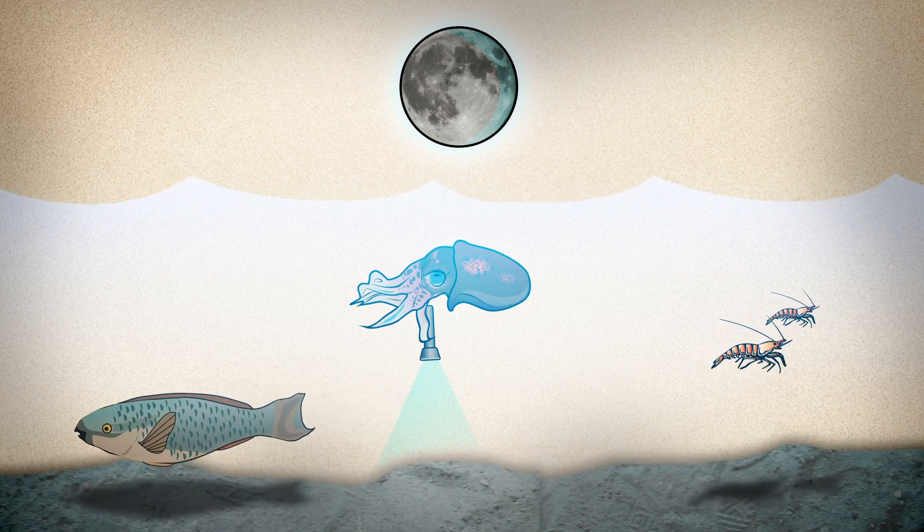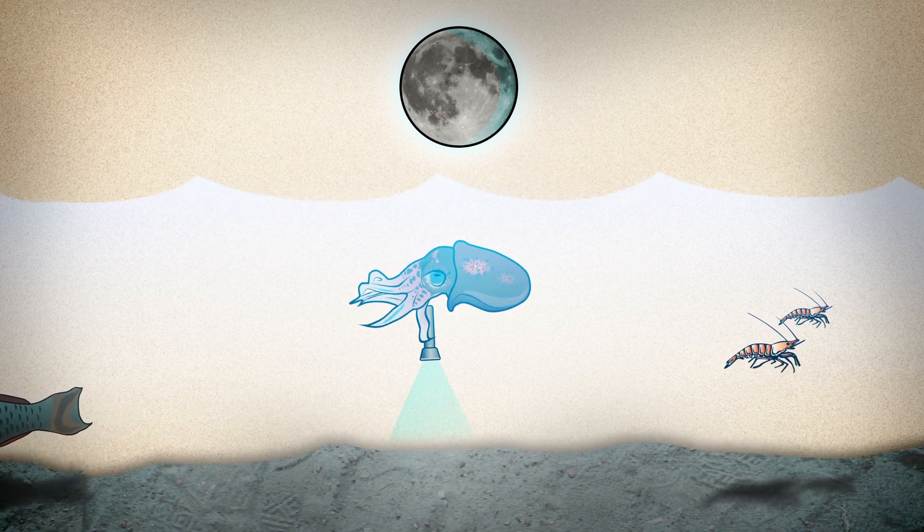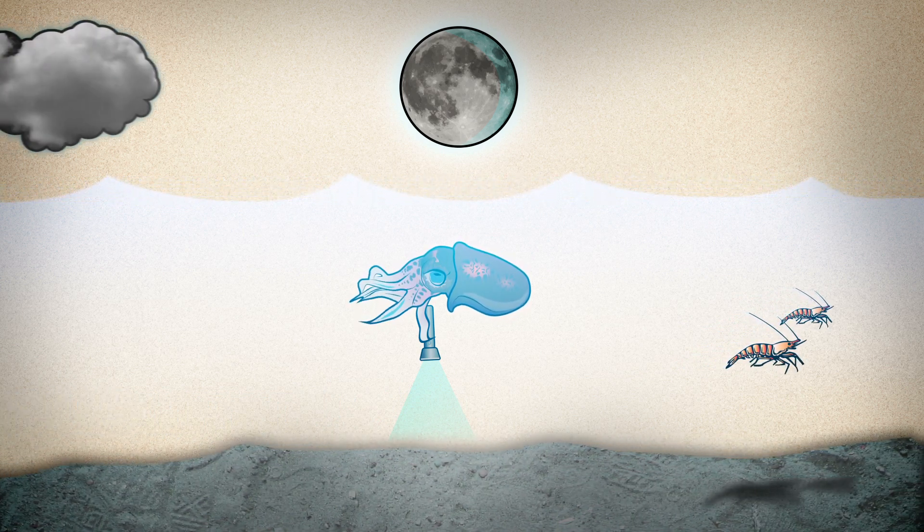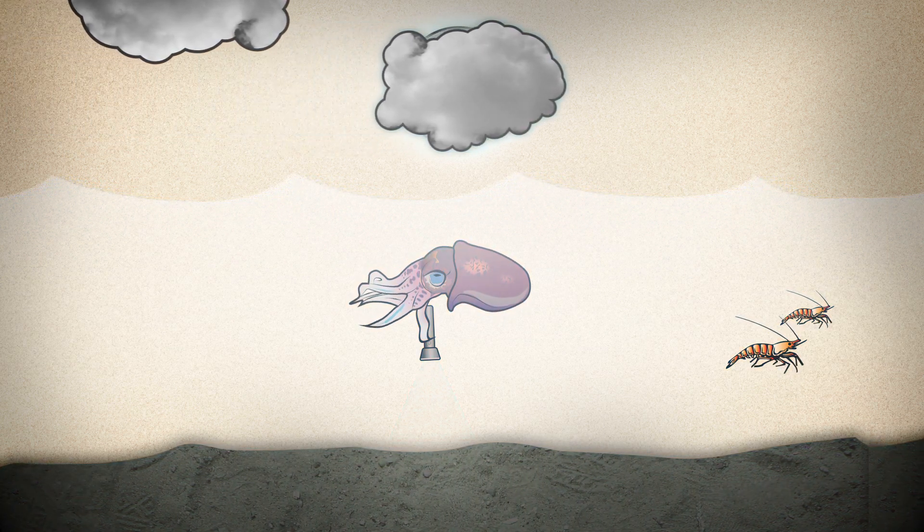Moving through the depths, the squid uses its ink sack to adjust the intensity of its living torch to match the strength of the moonlight. Also handy if a cloud suddenly passes in front of the moon.